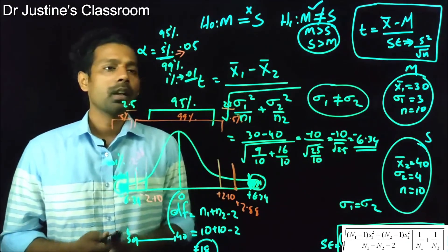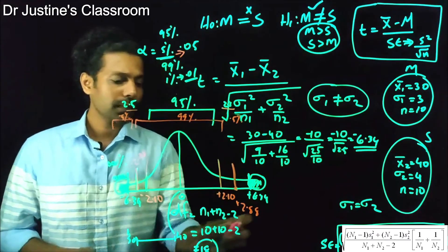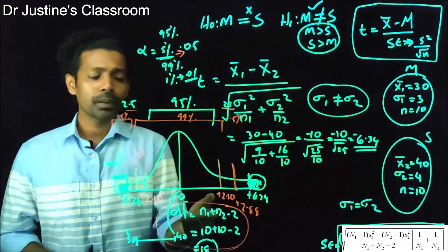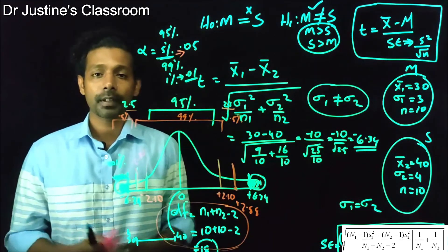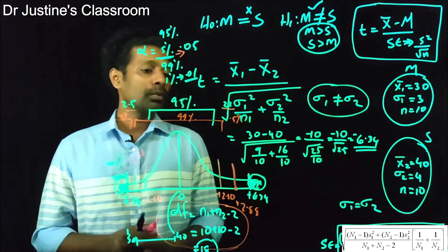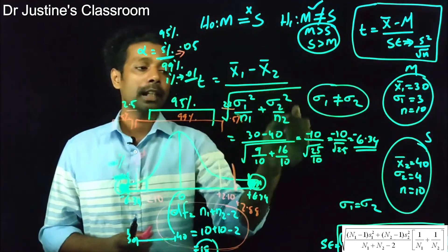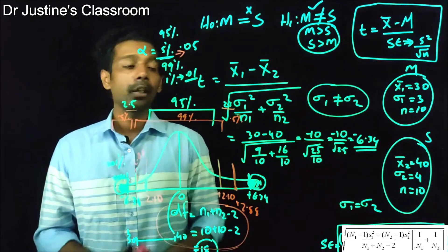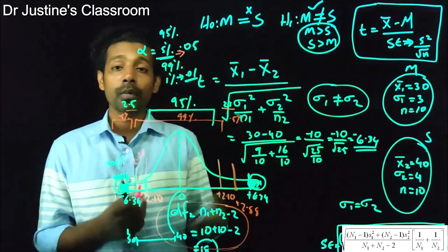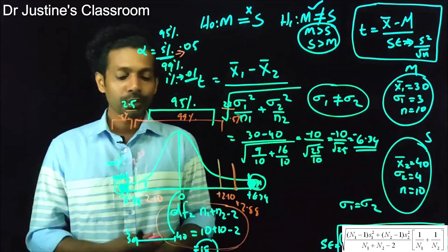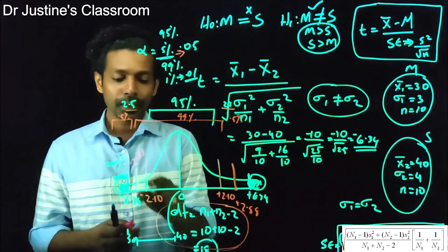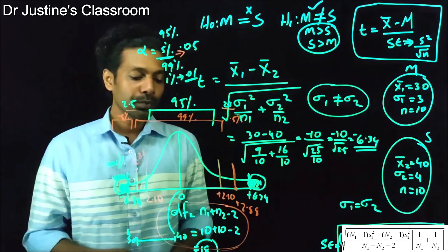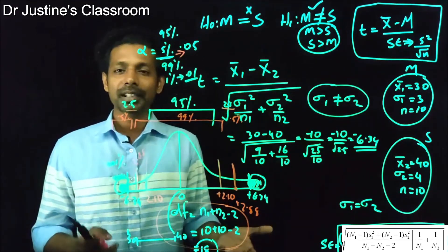Common exam questions from this topic include: finding sample size from degrees of freedom, or calculating degrees of freedom from sample size. You may also be given mean difference and standard error and asked to calculate the t-value, or make a judgment about whether groups differ significantly based on a given cutoff point at 0.05 or 0.01 level.